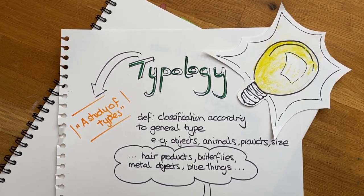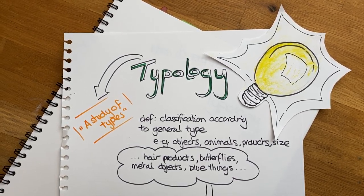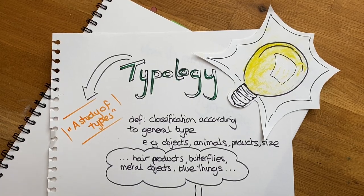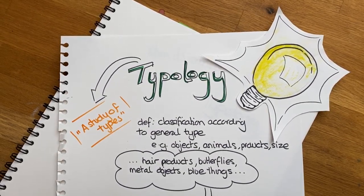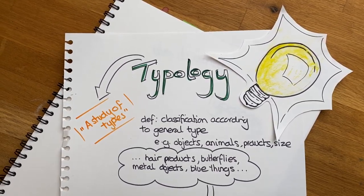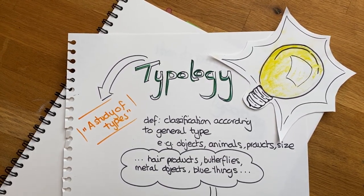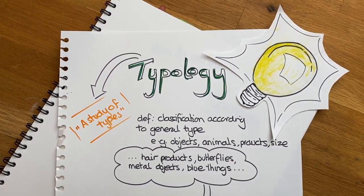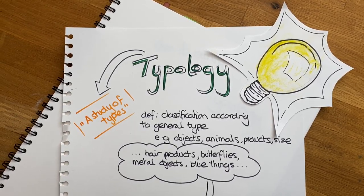It could be animals — historic artists have certainly looked at animals, sea creatures, and the natural world using typology. But also we could use it in today's world, looking at things around our home: hair products, things that are metal, things that are blue. We can categorize things — categorization is another way of thinking about it.